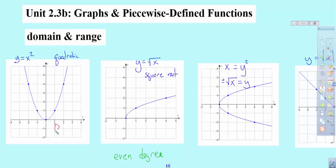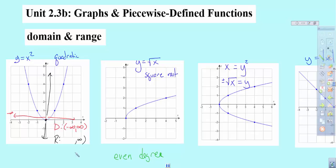Same thing — we've got our domain. We start at the origin, look off to the left towards negative infinity, and yes, the graph keeps coming out. So the domain goes from negative infinity. I look the other way — positive infinity. Now the thing about an even degree function is it has a restriction on one of them. If I go to the origin and look down, I don't see my graph. But looking up, my graph goes forever to positive infinity. The question is where do I start? Well, I'm touching the point at 0, 0. So my range starts at 0, and I include it with a bracket using interval notation.